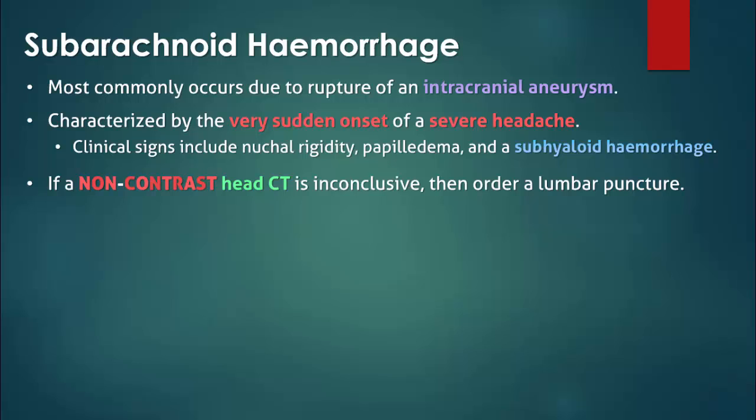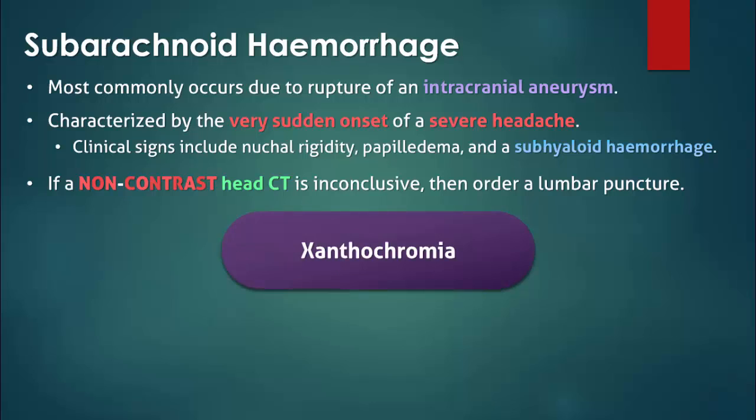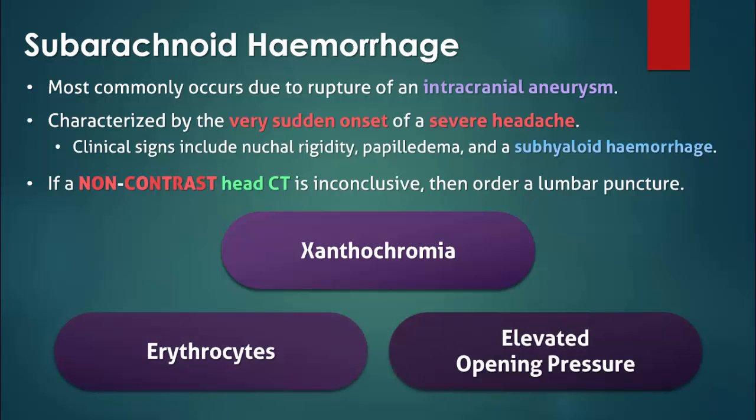The first test to order is a non-contrast CT scan of the head, which is very sensitive if obtained within 24 hours of onset. A lumbar puncture is only indicated if the CT is inconclusive and does not reveal any contraindications. The most characteristic finding in the cerebrospinal fluid is xanthochromia; however, it is usually not present until several hours after the onset of the hemorrhage. Other suggestive findings include the presence of erythrocytes and an elevated opening pressure.